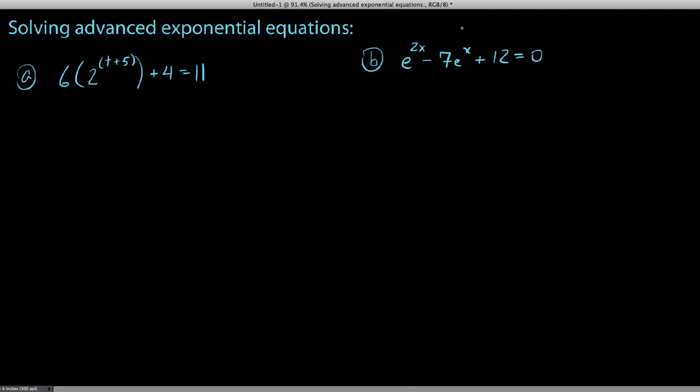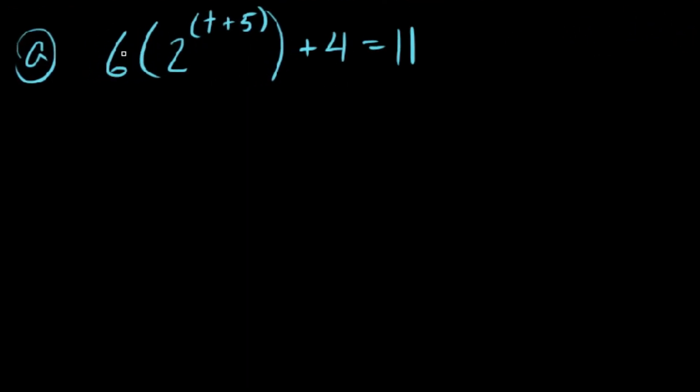So let's go ahead and take a look on the left over here at problem number A. You notice I have 6 times the quantity 2 to the power of t plus 5, that plus 4 equals 11. So here's the deal: when you're solving an exponential equation or an exponential phrase, you want to get that exponential base isolated before you do anything, which means before we do anything we're going to have to get rid of this 4 and we're going to have to get rid of this 6.